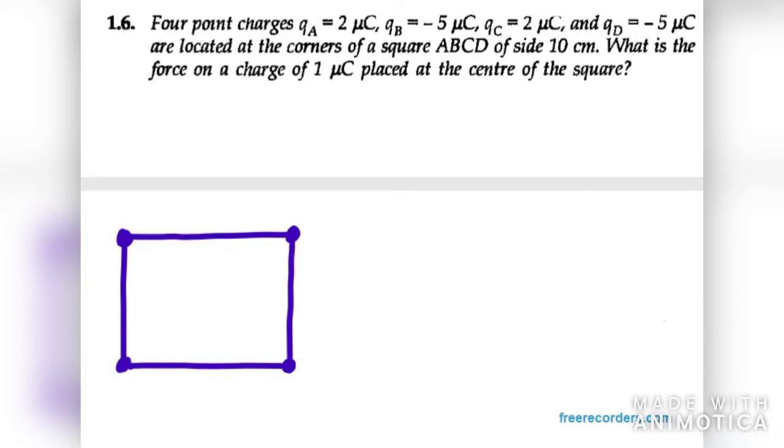Let's start with question number 6. It says four point charges. So let the first one be A, that is 2 microcoulombs. Then B is minus 5 microcoulombs. Then C is 2 microcoulombs again. Then we have D, that is minus 5 microcoulombs. On a square, its side is equal to 10 cm each.